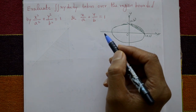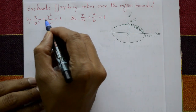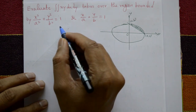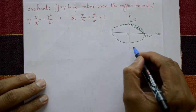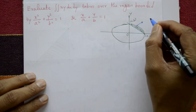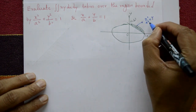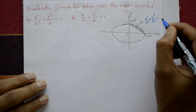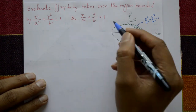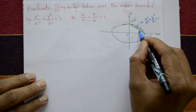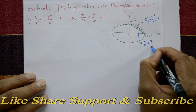The equation x²/a² + y²/b² = 1 is an ellipse. The second equation x/a + y/b = 1 is a straight line.